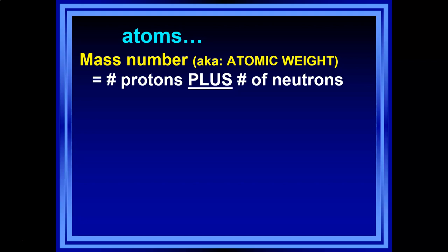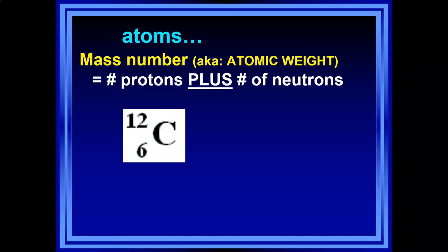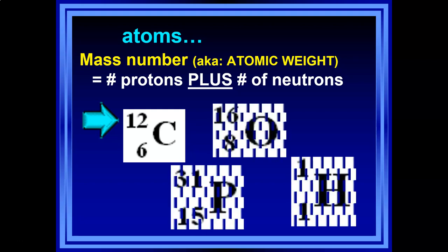We also have mass number — also known as atomic weight. Mass number is essentially everything in the nucleus: the number of protons plus the number of neutrons. We write it as a superscript in front of the atomic symbol. The number 12 in this example is carbon's mass number.